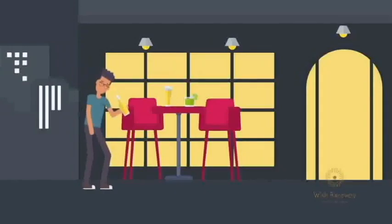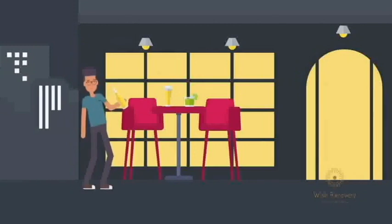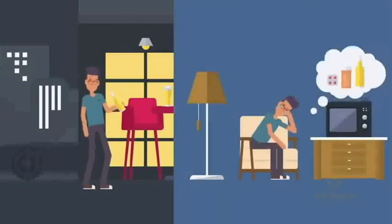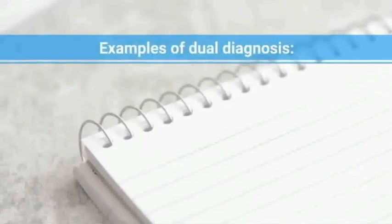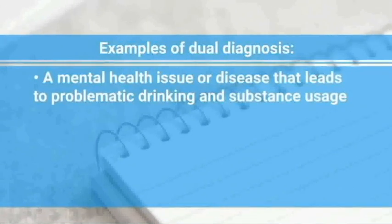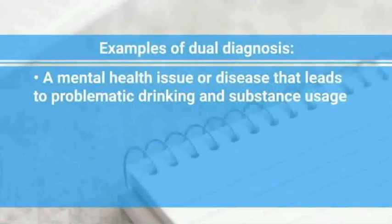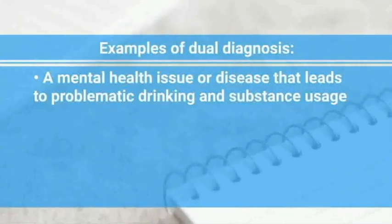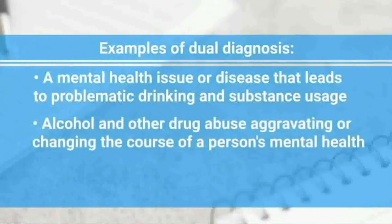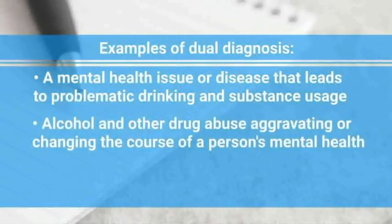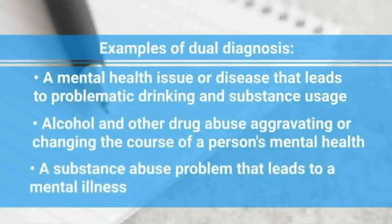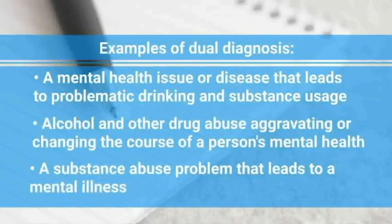Either condition could come first. Substance use can likely cause a person to have a mental health disorder, or a mental illness can lead to or make a person more susceptible to problems with substance abuse. Examples of dual diagnosis include: a mental health issue that leads to problematic drinking and substance usage; alcohol and other drug abuse aggravating or changing the course of a person's mental health; and a substance abuse problem that leads to a mental illness.